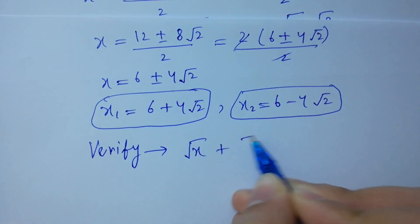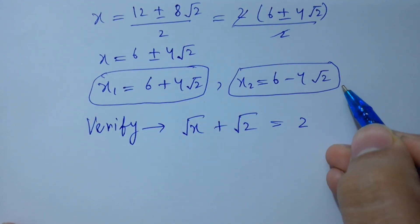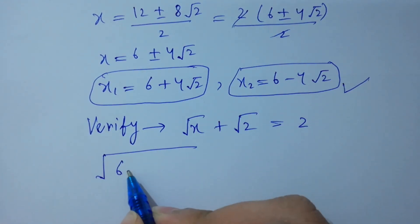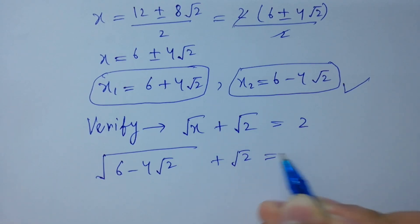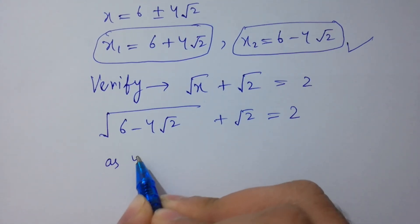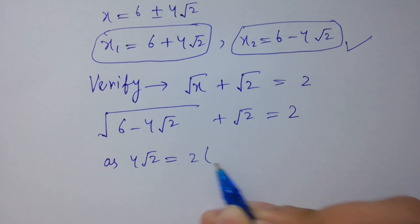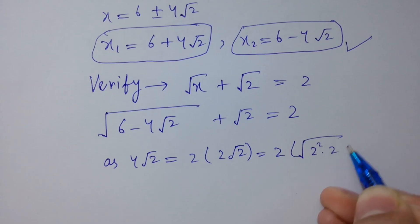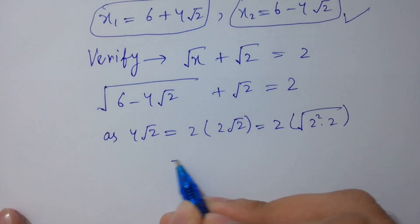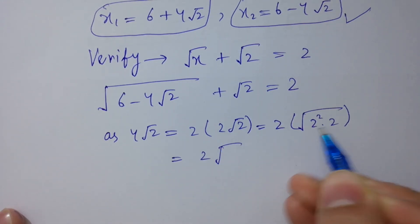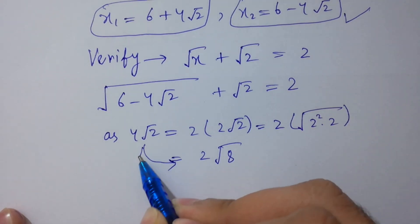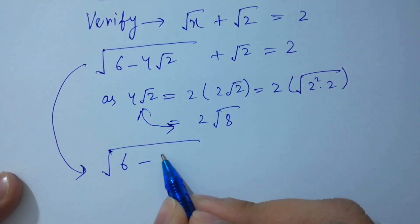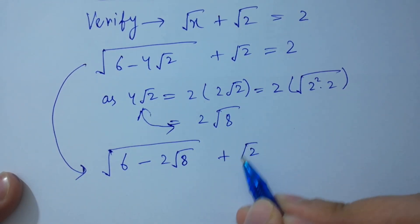Now verify: square root of x plus square root of 2 equals 2. Take x₂ equals 6 minus 4 square root of 2. We have square root of 6 minus 4 square root of 2, plus square root of 2, equals 2. Note that 4 square root of 2 equals 2 squared times square root of 2, which equals 2 square root of 8. So it becomes square root of 6 minus 2 square root of 8, plus square root of 2, equals 2.